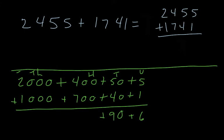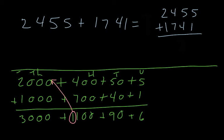Four hundred plus seven hundred is one thousand one hundred. Two thousand plus one thousand is three thousand. Now we go back — we have a set of a thousand here which needs to be dealt with, so we add it to the thousands column, making it not three thousand but four thousand.